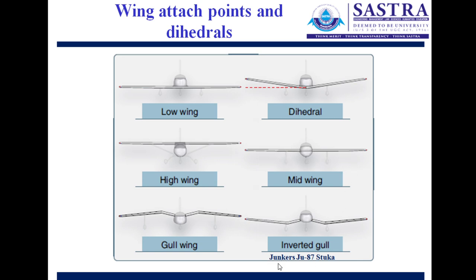A famous example of the gull wing design is the Junkers Ju 87 Stuka, used around World War II. In modern aircraft, gull wing and inverted gull wing designs are no longer used. While the low interference drag is an advantage, the high manufacturing cost and intensive maintenance requirements are the two biggest reasons these designs were ruled out from modern aircraft.